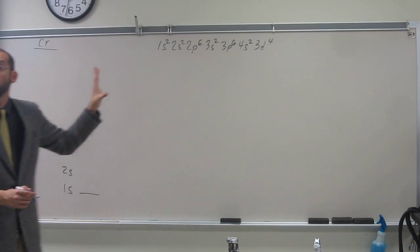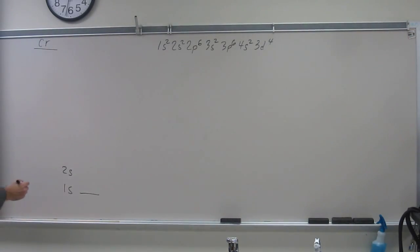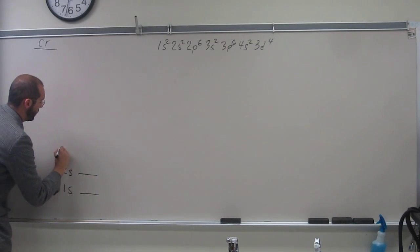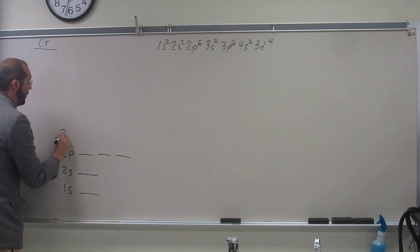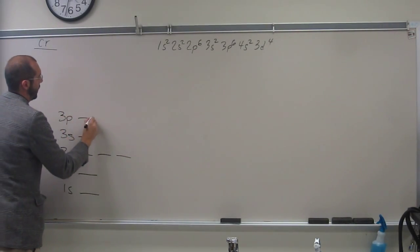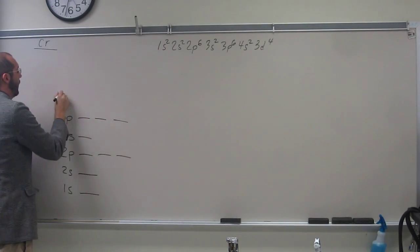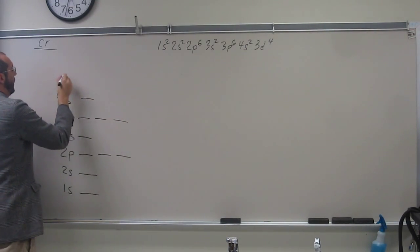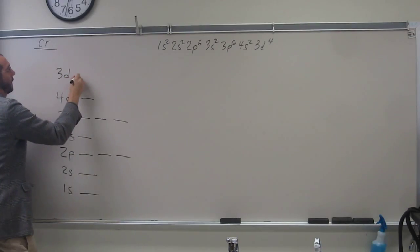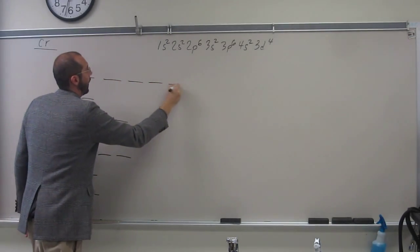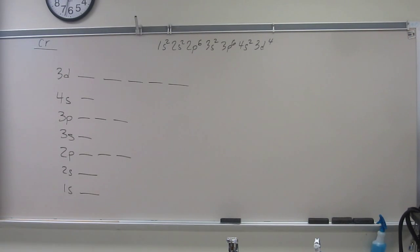And let's just show what it actually does. Okay? So 1s, 2s, 2p, that's three of them, 3s, 1, 3p, 4s, and then 3d. Okay, is everybody okay with that orbital diagram? Okay, so now let's fill it up.